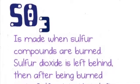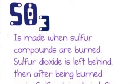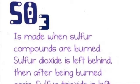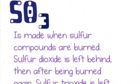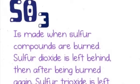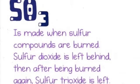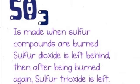Sulfur trioxide is made when sulfur compounds are burned. Sulfur dioxide is then left behind, and after being burned once more, sulfur trioxide is left.